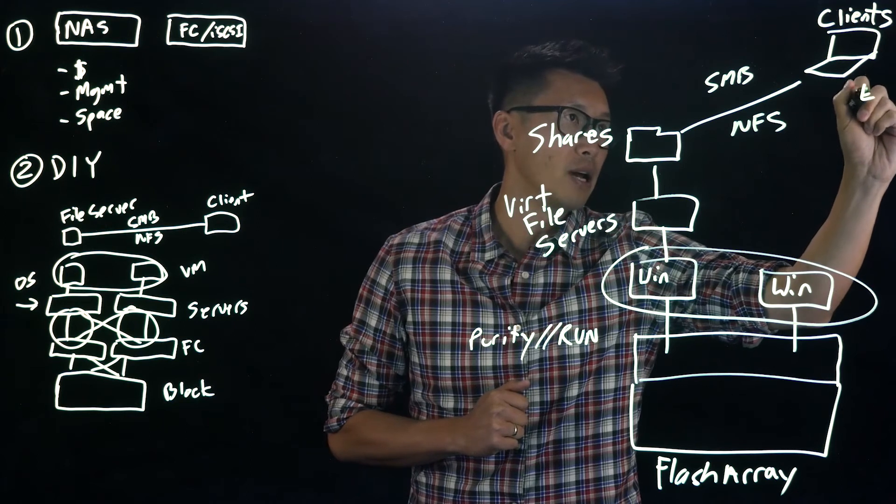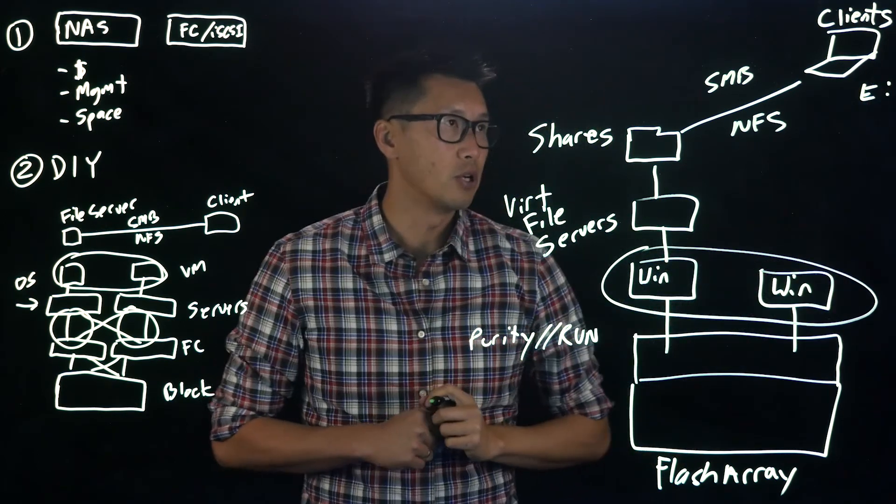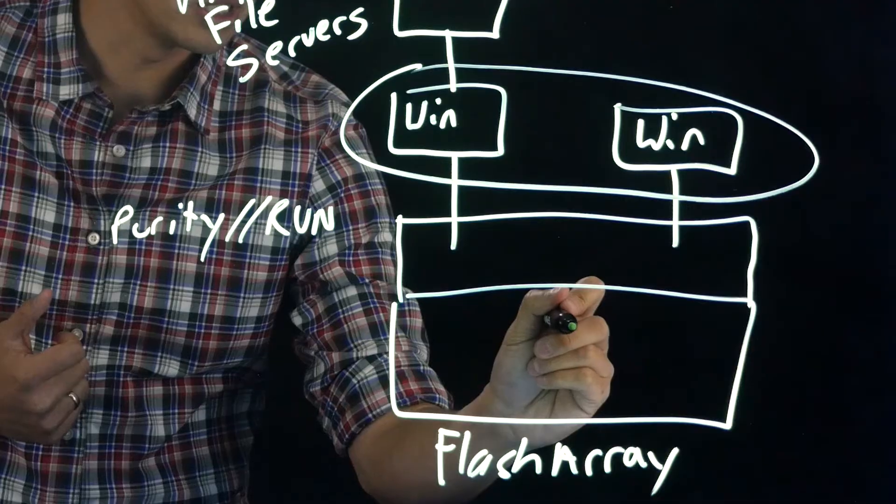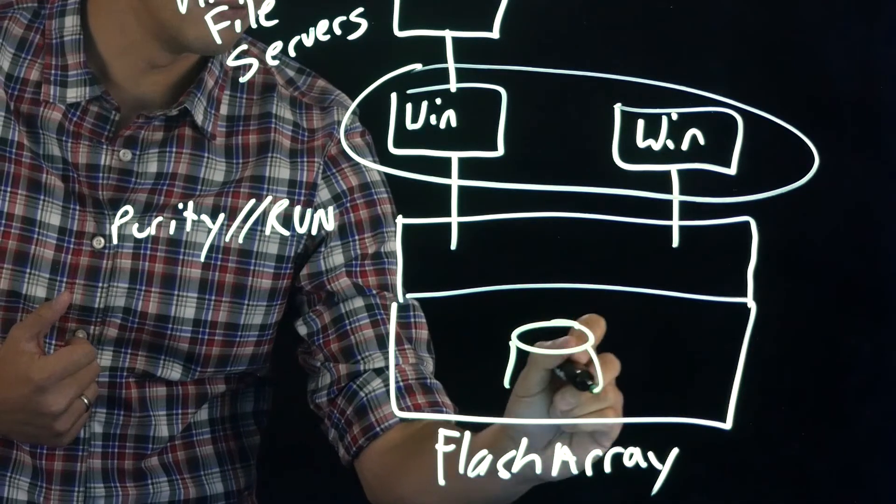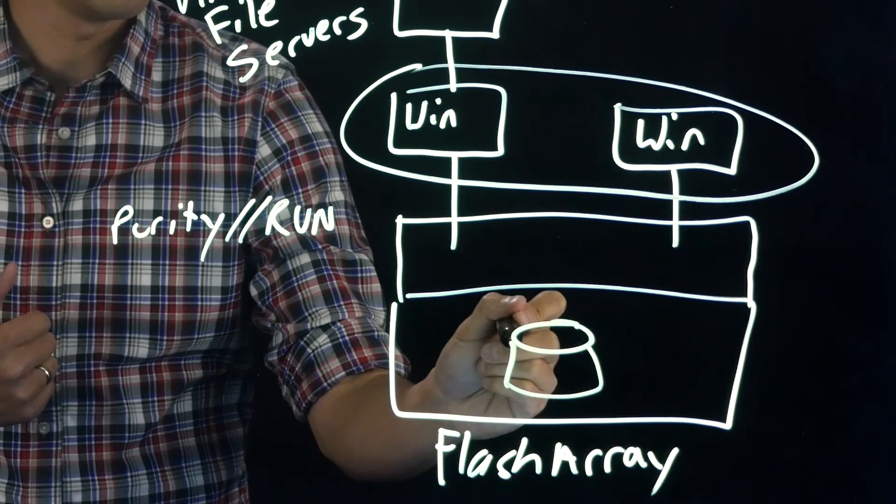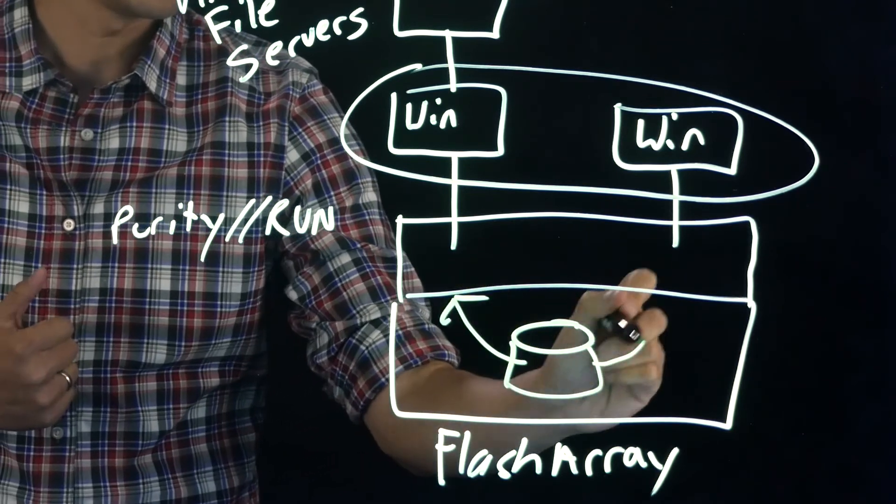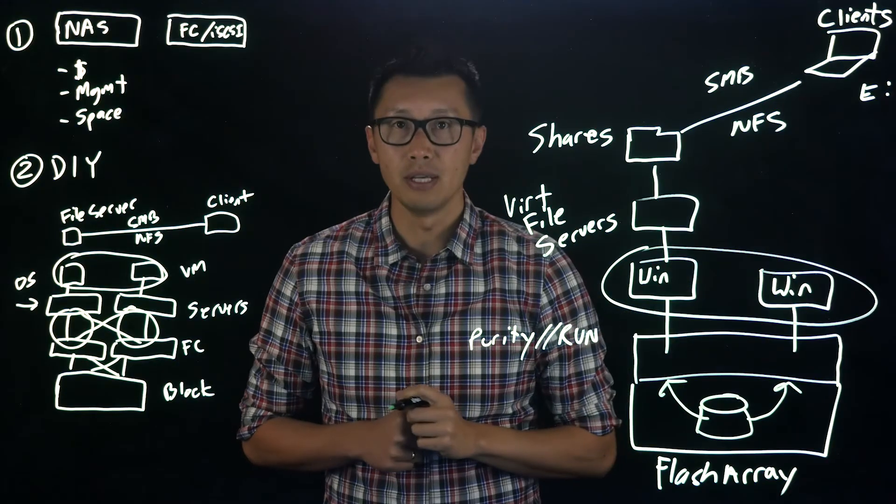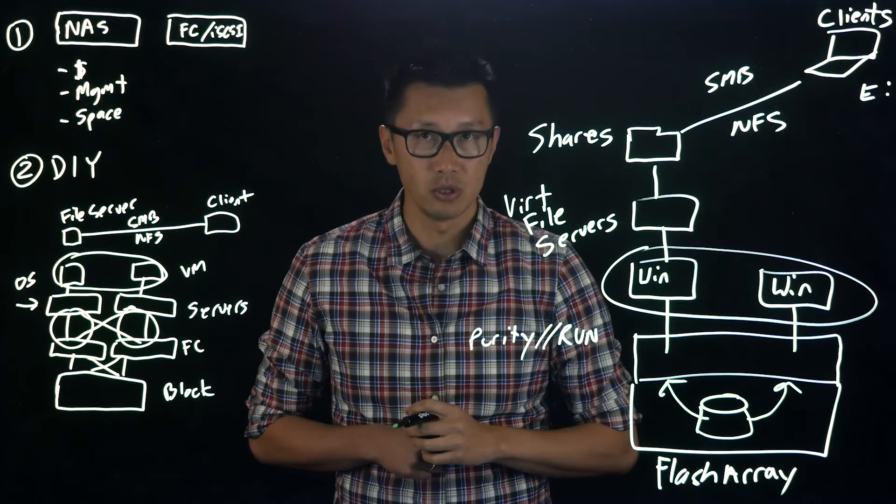At this point, you have your clients that can connect to your shares using SMB or NFS to have additional storage. You will now have your E-volume or F-volume. If you want to expand that even further, you can create more volumes, connect them up to each of the VMs, and expand your storage.